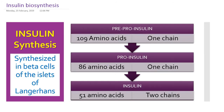Coming to insulin biosynthesis: insulin is synthesized from beta cells of the islets of Langerhans. Initially, whatever insulin is produced or synthesized in the ribosome, especially in the rough endoplasmic reticulum, it is about 109 amino acids. This is an inactive insulin called pre-pro-insulin. It is one single peptide chain.